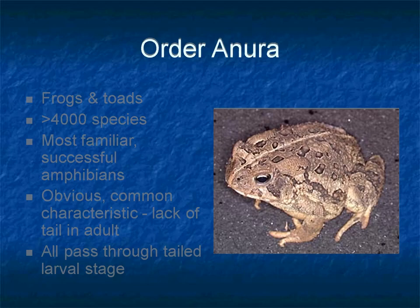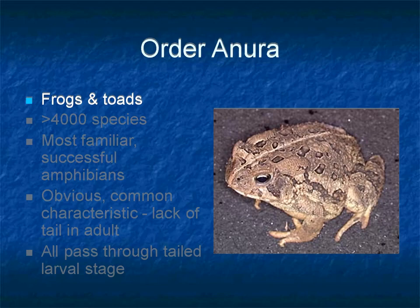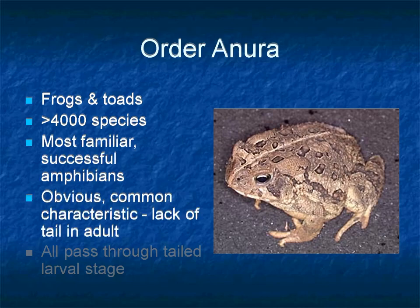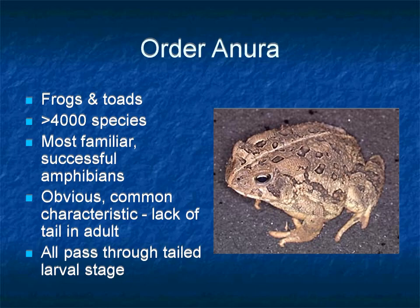The word Anura is a Greek word which means 'no tail.' So the members of this order are tail-less, which is an obvious common character in adults. This order includes frogs and toads with approximately more than 4000 species. All these species pass through a larval stage in which they possess a tail, but in the adult stage they lose their tail after metamorphosis.